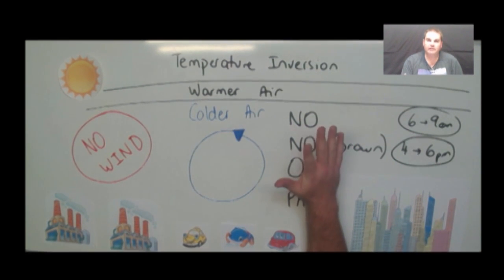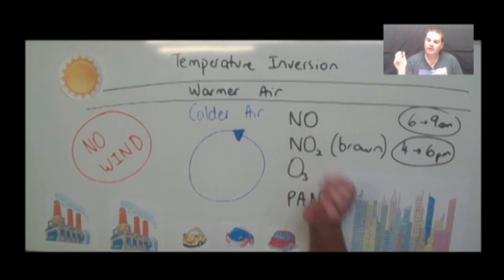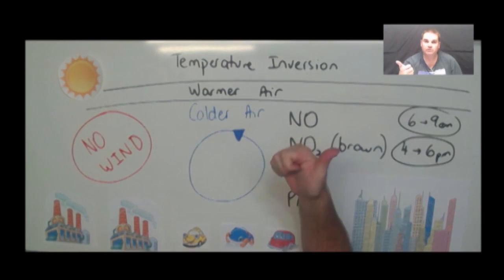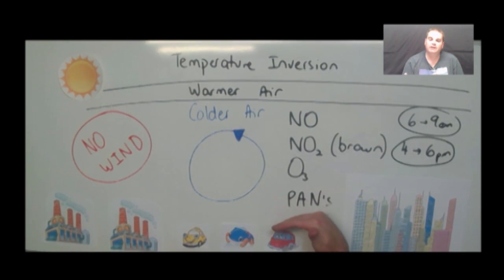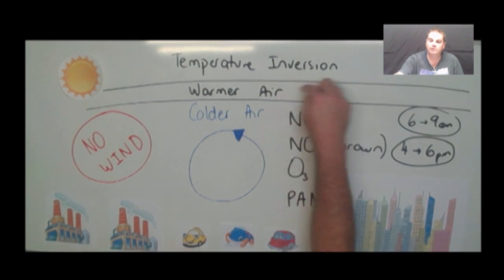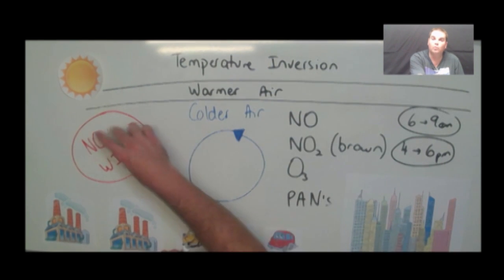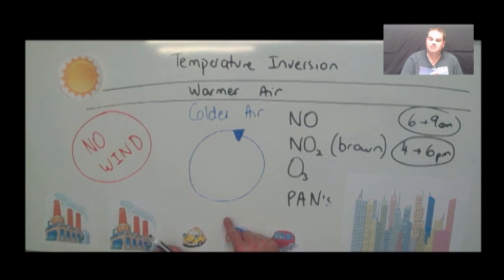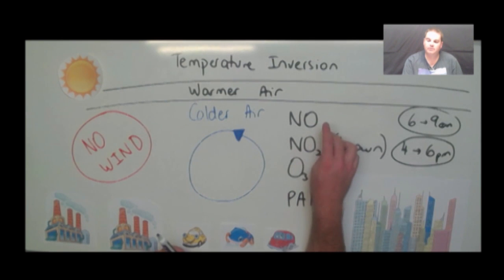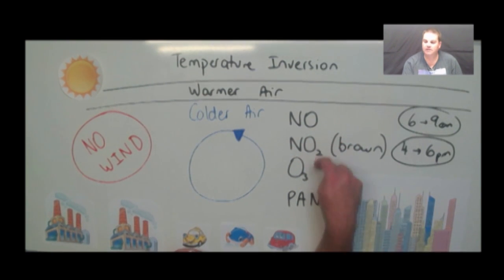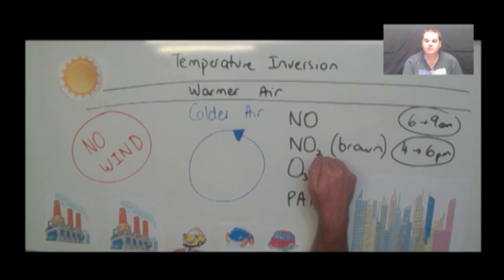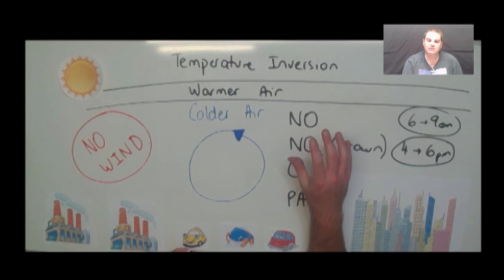So the key things for photochemical smog: you need pollution, you need a temperature inversion, you need no wind, and you need sunlight — because remember, nitrogen dioxide breaks down in the presence of sunlight to form ozone through those secondary reactions to form those secondary pollutants. So those are the four key things that you need.